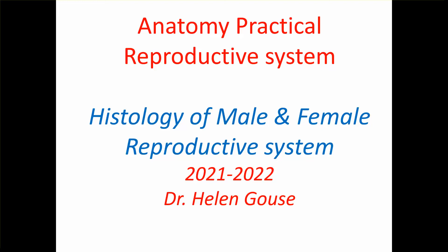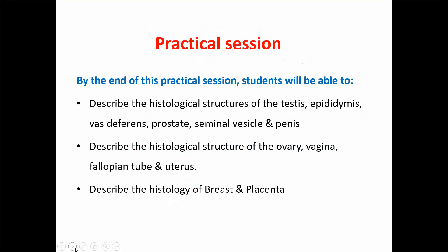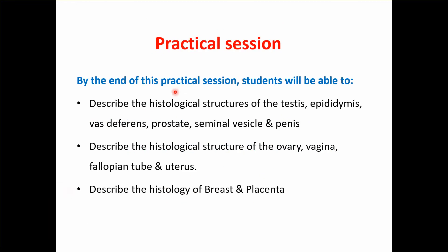This video will show you about the anatomy practical for the male and female reproductive system. At the end of the session you will be able to describe the histological structures of the testis, epididymis, vas deferens, prostate, seminal vesicle, and the penis. You will also describe the histological structure of the ovary, vagina, fallopian tube, uterus, breast, and the placenta.